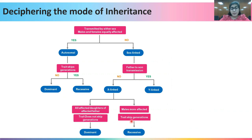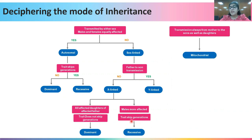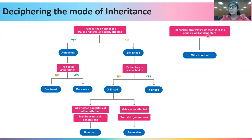There is another kind of inheritance known as mitochondrial inheritance, in which the transmission of traits always occurs from the mother to all her sons as well as daughters. This is because all children always inherit their mitochondria from their mothers.